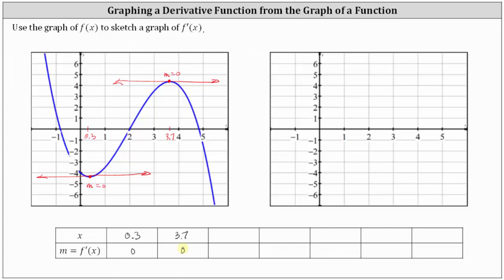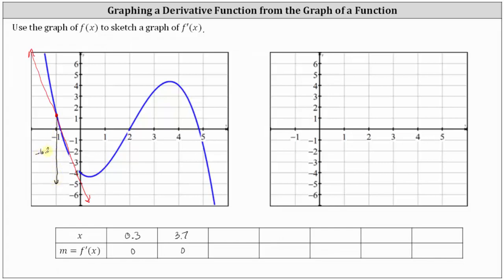Now let's sketch a tangent line at x equals negative one, which is approximately here. We want to go down far enough so that we can go over exactly one unit. If we go down just over six units — let's call it down 6.2 units — that's negative 6.2 for the vertical change, and then right one unit, we find another point on the tangent line. The slope of the tangent line is approximately negative 6.2 at x equals negative one, so the derivative function value is approximately negative 6.2.